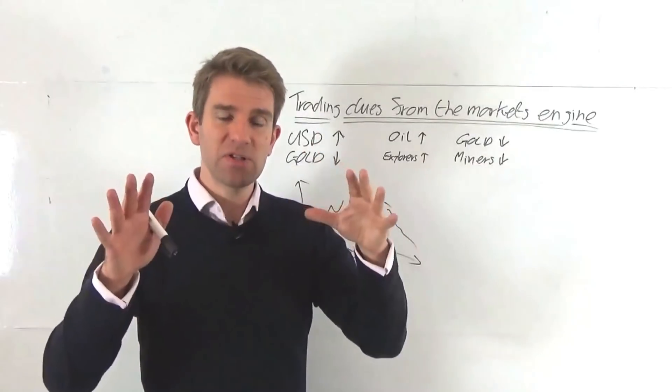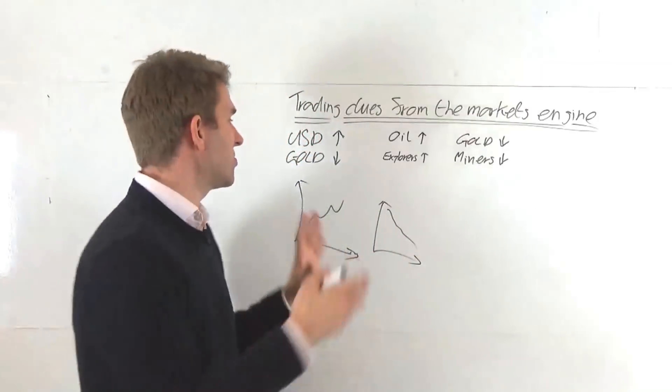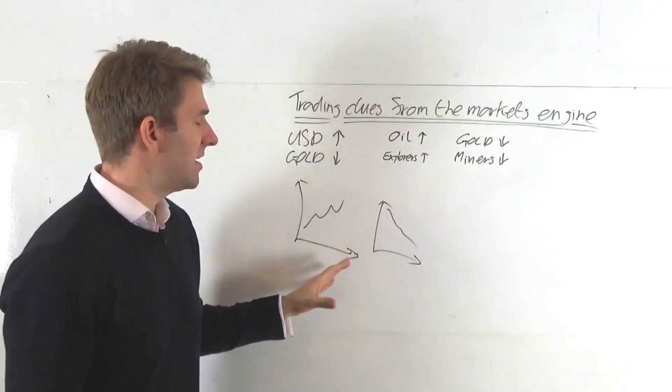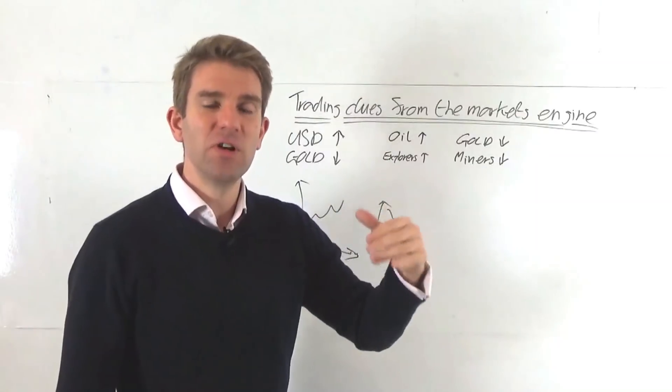And by the way, I want to just add this. There are relationships that we assume are going to happen. This is the assumptive one, the inverse correlation of commodities with USD. And these in a second we'll look at. This is the assumption. But there's also what's actually happening in real time.